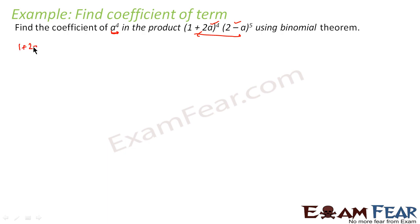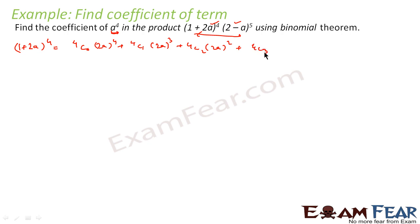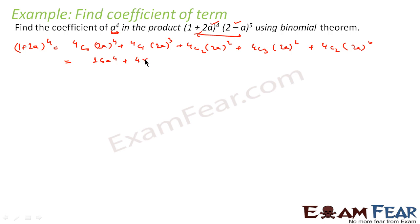So we will say (1 + 2a)⁴ is equal to 4C0 times (2a)⁴ plus 4C1 times (2a)³ plus 4C2 times (2a)² plus 4C3 times (2a)¹ plus 4C4 times (2a)⁰. Now 4C0 equals 1, so we have (2a)⁴ equals 16a⁴, and (2a)³ equals 8a³. Plus 4C2 — let's find this.